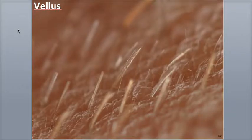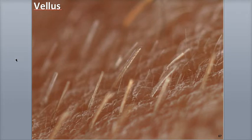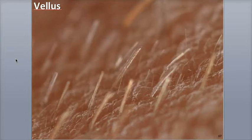The vellus hairs replace the lanugo covering the remainder of the body. These short, fine, light-colored hairs are the ones we know as peach fuzz. As the child reaches puberty, androgen hormones trigger the vellus hairs at the armpits and pubic regions to become terminal hairs. In boys, the terminal hairs also replace the vellus hairs on the chest, limbs, and face, resulting in hairy chests, arms, legs, beards, and mustaches.